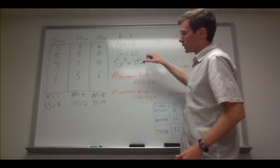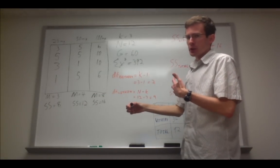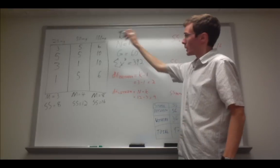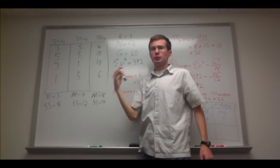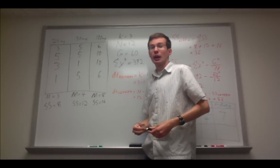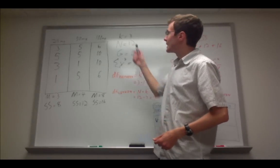We need a few other numbers before we can start calculating our F-ratio. K in ANOVA means the number of groups. So we have three columns representing three different dosages, three different groups of people exposed to different levels of a drug. So K equals 3.